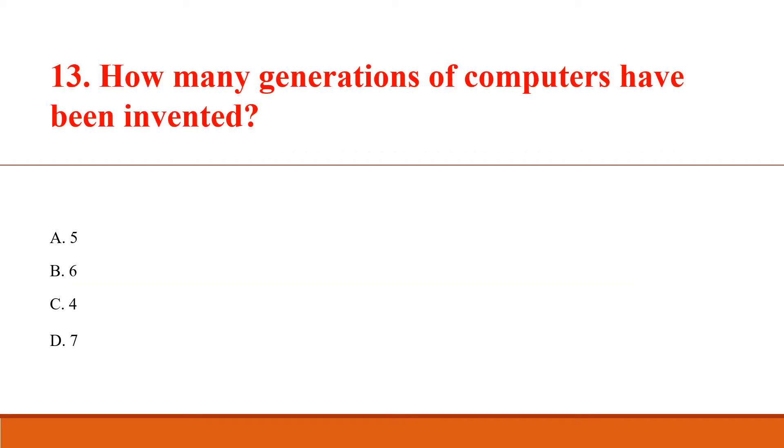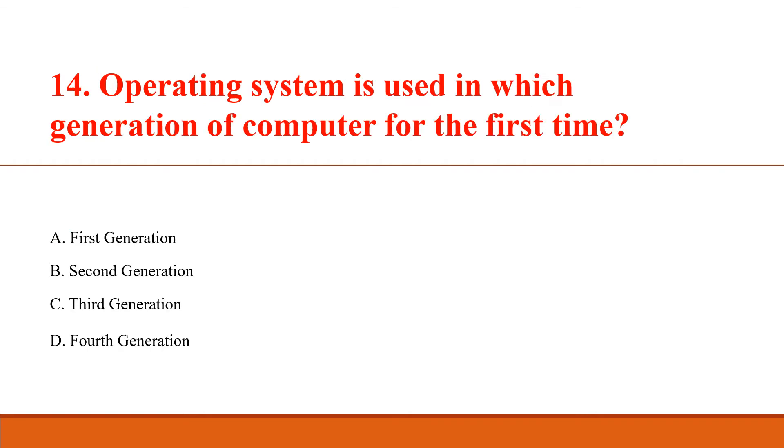How many generations of computers have been invented? Answer Option A: 5. Operating system was used in which generation of computer for the first time? Answer Option C: Third generation.